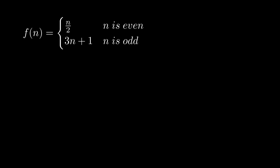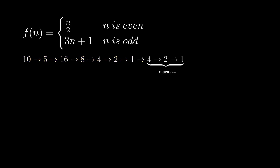For example, if you start with 10 — as 10 is even, we divide 10 by 2 to get 5. As 5 is odd, we multiply it by 3 and add 1 to get 16. As 16 is even, we divide 16 by 2 to get 8. Eventually this goes to 4 to 2 to 1, and this 4-2-1 pattern repeats forever. The conjecture is that no matter which positive number you choose, we end up with the 4-2-1 pattern.